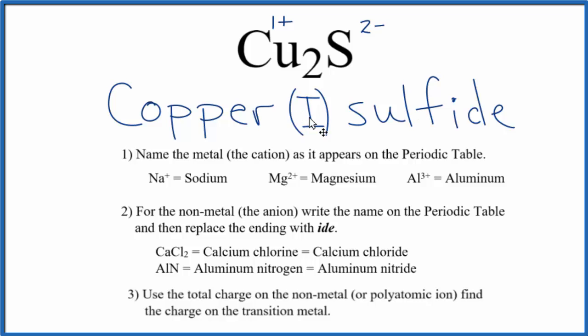It's copper 1 sulfide, and the 1 comes because the copper has a 1 plus ionic charge here. This is Dr. B with the formula for Cu2S. It's copper 1 sulfide. Thanks for watching.